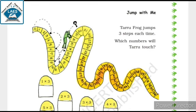Jump with me. Tharu frog jumps 3 steps each time. 15. 15 plus 3, 18. 18. 18 plus 3, 21. So you have to tell them.